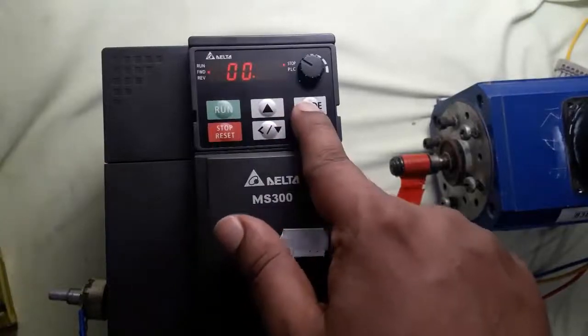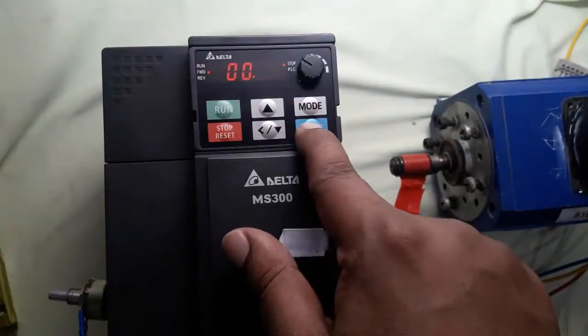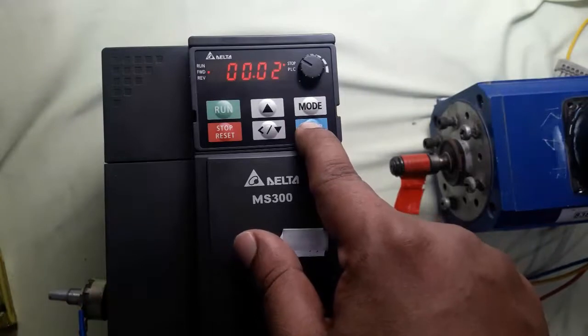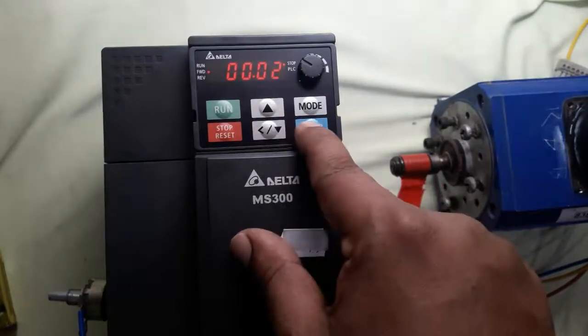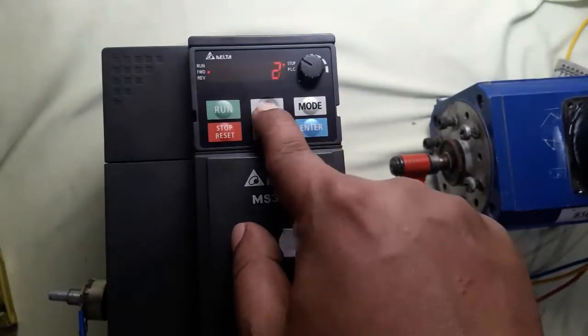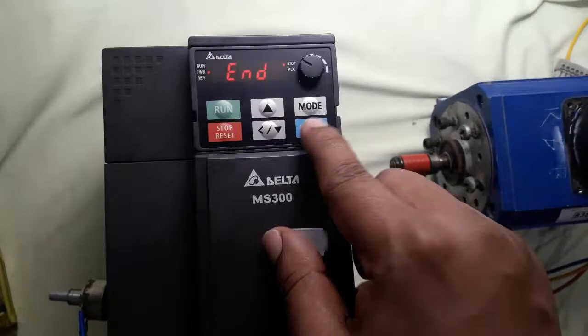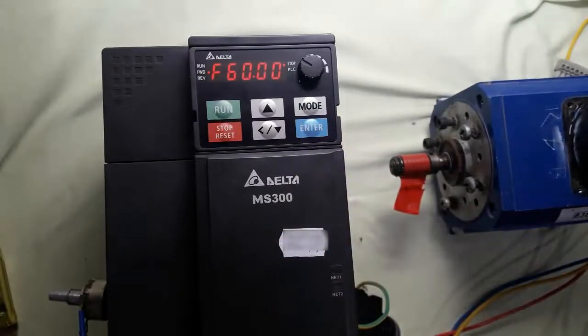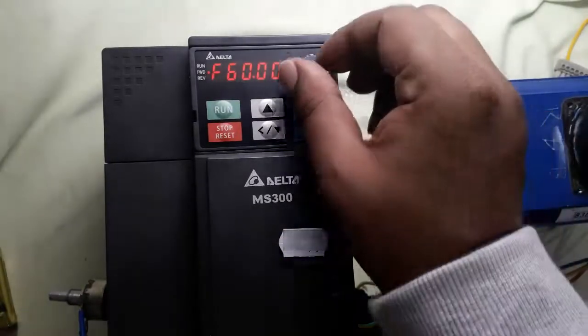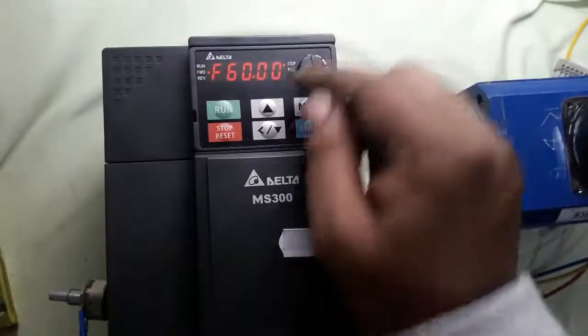For any inverter parameter setting, first need to reset the inverter. Delta inverter resetting parameter is 0002. We set here 10 for all parameters in factory setting. Press ENTER for initialization of Delta inverter. Now this inverter is initialized and working in keypad mode.